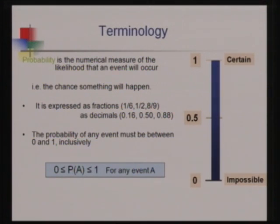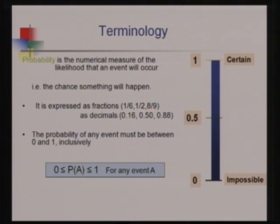Starting with the very basic concept of probability: how do we define probability? Probability is the chance that something is going to happen — that some event is to occur. It is the numerical measure of the likelihood that an event will occur, expressed as fractions or decimals such as 0.16, 0.50, or 0.88.